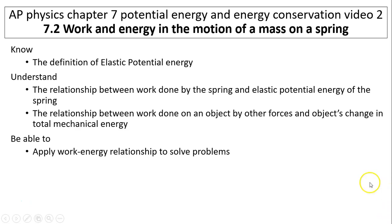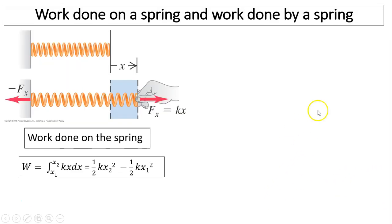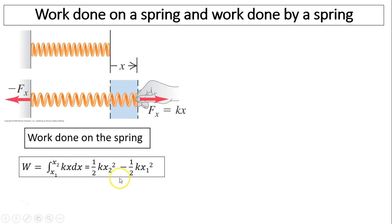Let's take a look at work done on a spring. When you do work on a spring, the work done equals the force you applied on the spring times the distance — that is kx times dx — because kx and dx are in the same direction, so the sign is positive. When you integrate this, you get one-half kx₂ squared minus one-half kx₁ squared.